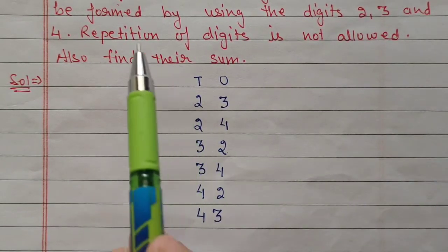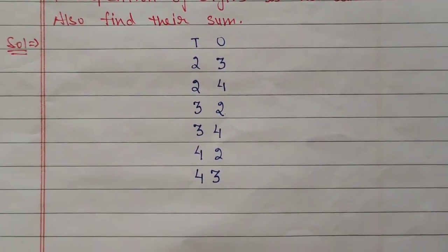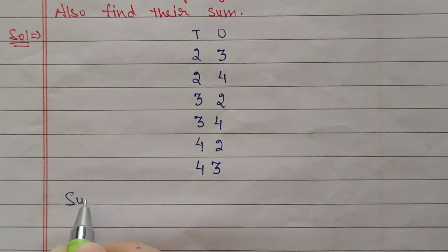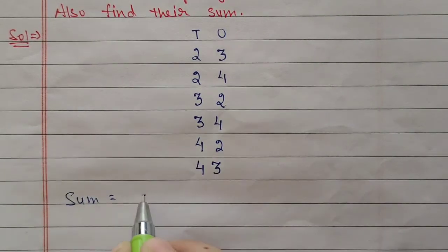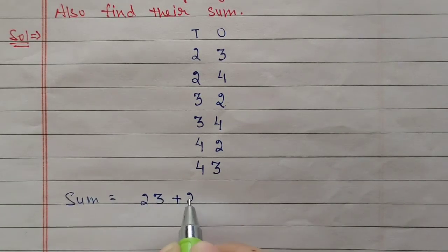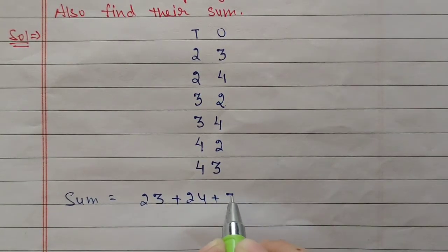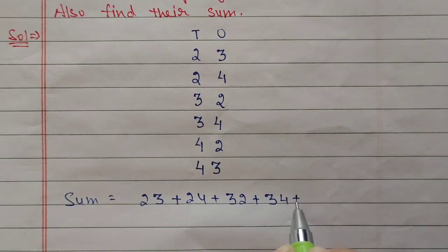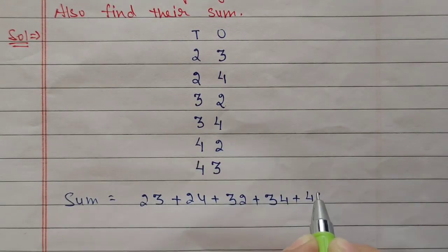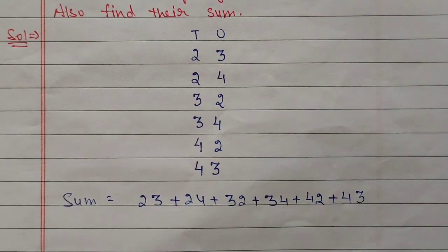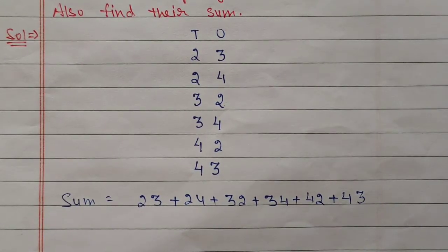Next they ask us to find their sum also. So we have to add: 23 + 24 + 32 + 34 + 42 + 43. After addition we will get 198.